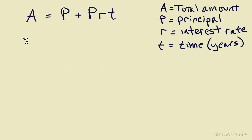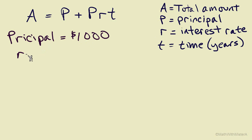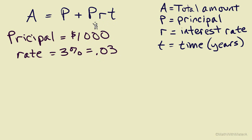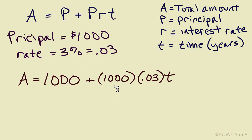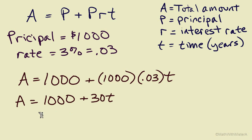We can also take a formula and investigate the relationship between two of the variables by fixing all the rest. Let's keep the principal at $1,000 and the interest rate at 3%, or 0.03 as a decimal. Substituting these values into the formula and keeping T as a variable, we multiply 1,000 times 0.03 to get a simplified relationship between the final amount and the time of the investment.